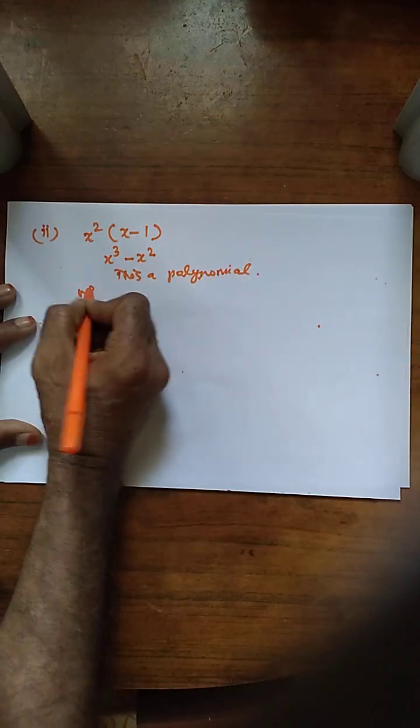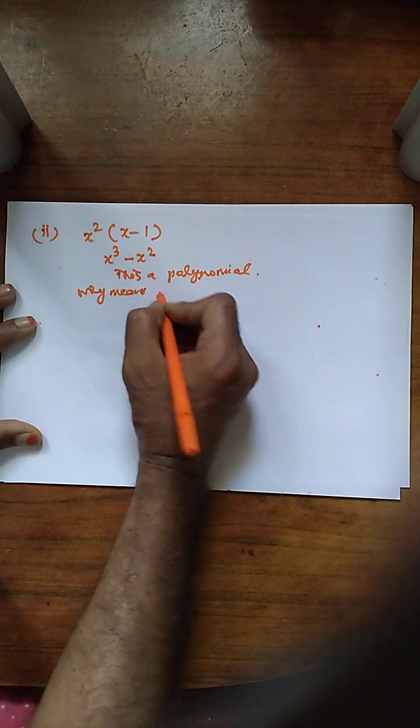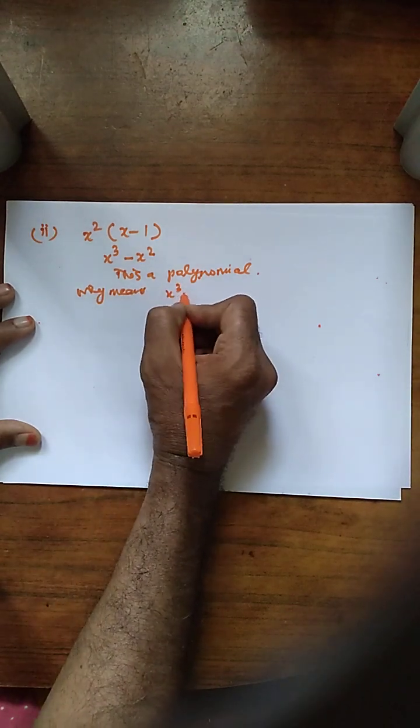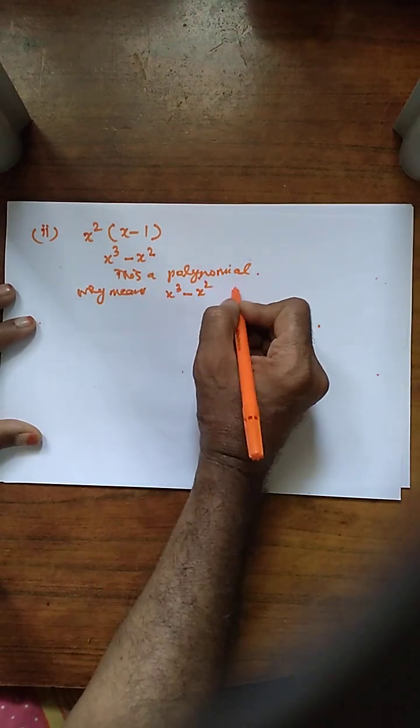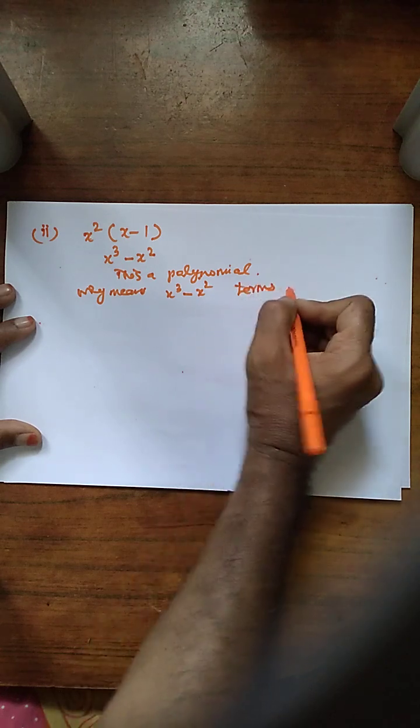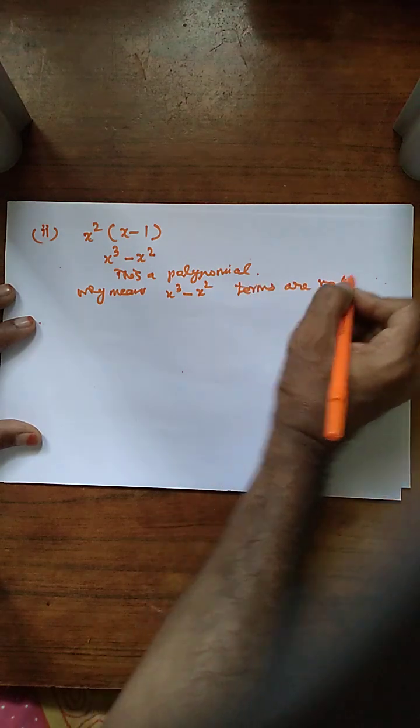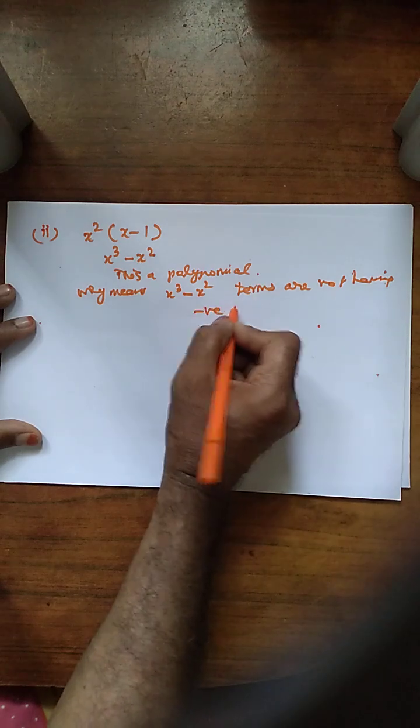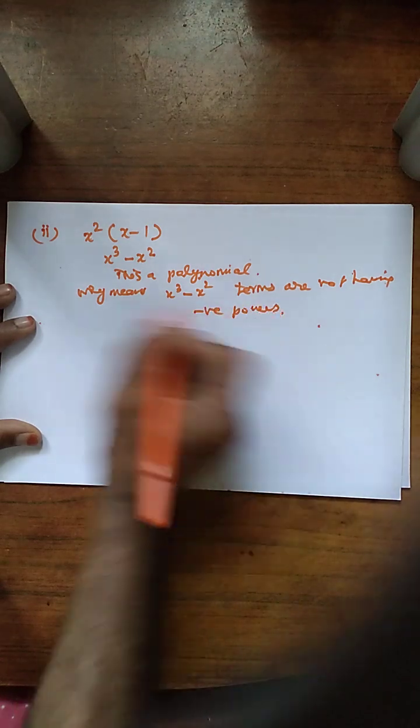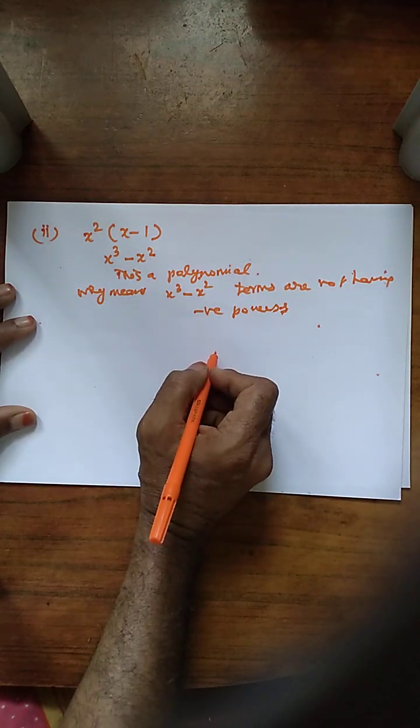Why? x cubed minus x squared terms are not having negative powers. So this is the reason.